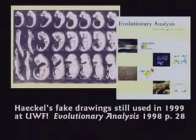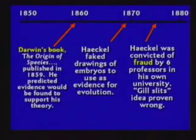Darwin wrote his book in 1859 and predicted evidence would be found. In 1869 Haeckel faked the drawings; in 1875 he was convicted of lying. But his drawings are still in textbooks 125 years later. I know it takes a while for textbooks to update, but I think 125 years is long enough. They're still teaching this stuff in textbooks all over the world.